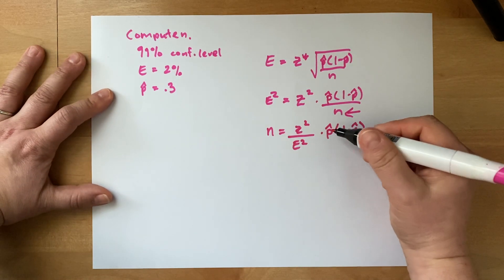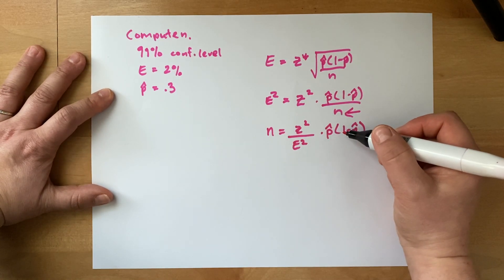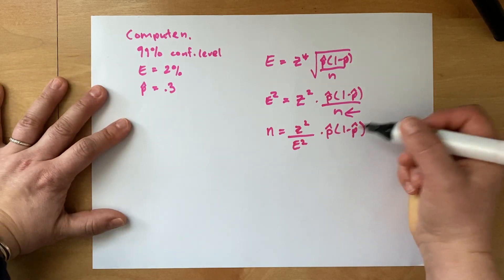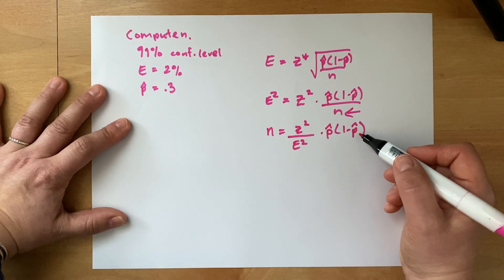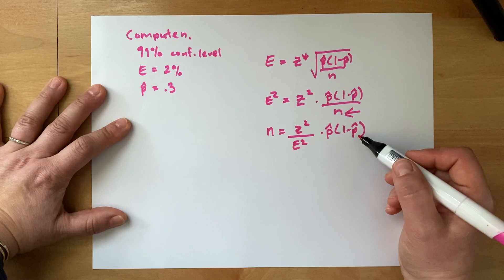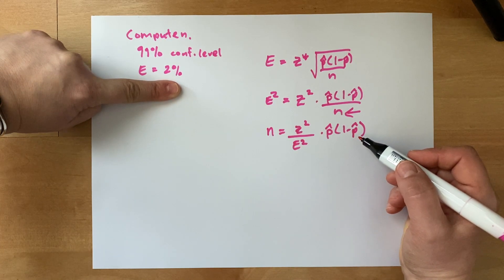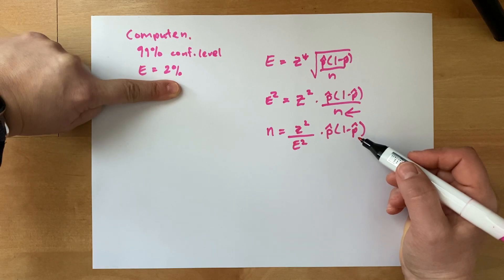Sometimes it's not necessarily a hat that's given in the equation. Sometimes it is a p sub g to mean that it's a guess. Sometimes we don't know anything about proportions and this is the equation, or these are the facts that are given to you. You don't know anything about your proportion.